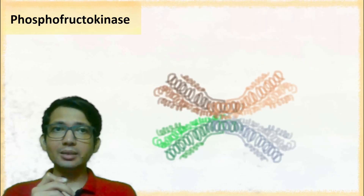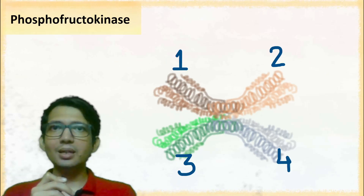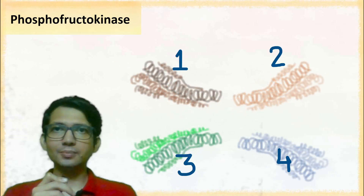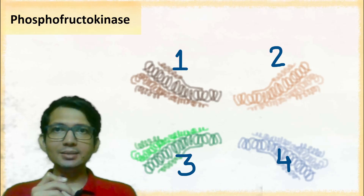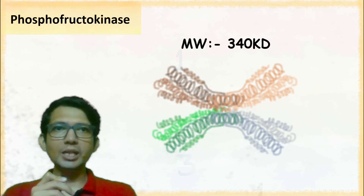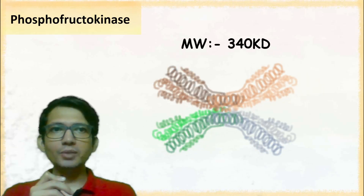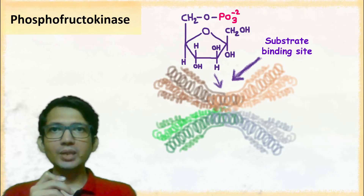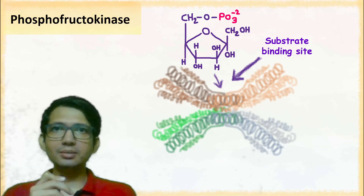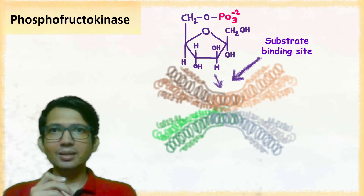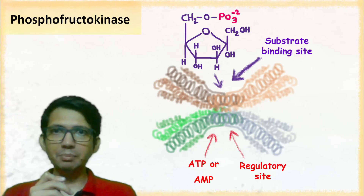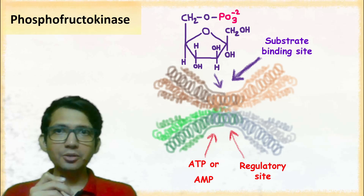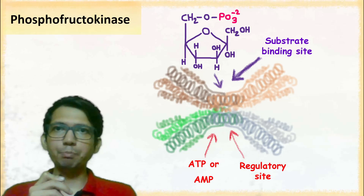Phosphofructokinase is a tetramer, meaning it has 4 subunits. The overall molecular weight of this enzyme is 340 kilodaltons. The subunits are arranged such that one half of the enzyme binds with the substrate while the other half binds regulators such as ATP or AMP.